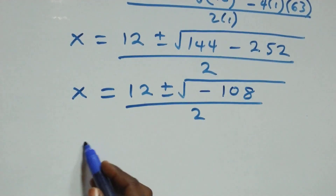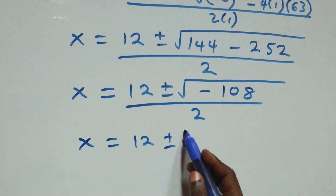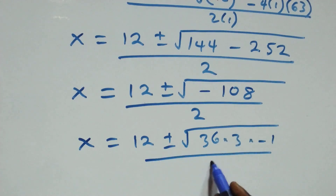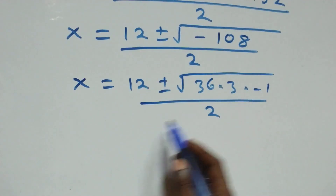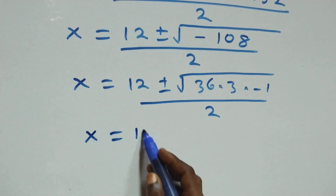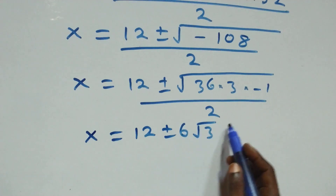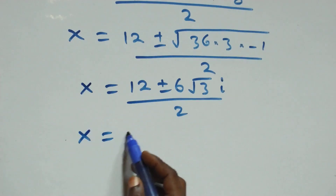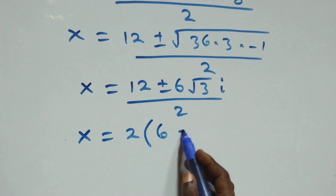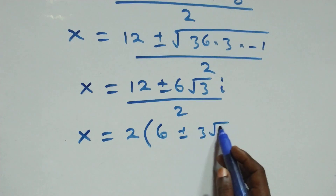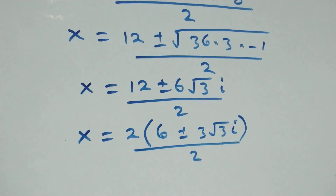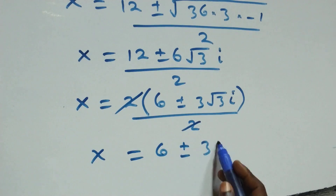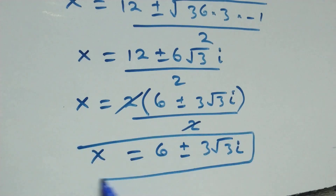This can be expressed as x equals 12 plus or minus square root of 36 times 3 times minus 1, all over 2. Separating: square root of 36 is 6, root of minus 1 is i. So 2 cancels, giving x equals 6 plus or minus 3 root 3 times i — two complex solutions.